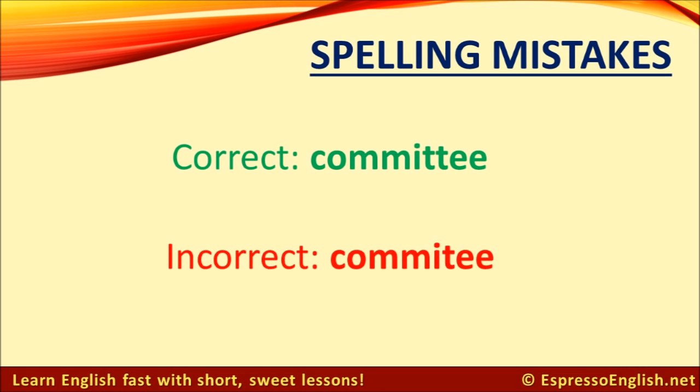Another commonly misspelled word is 'committee.' It has two M's, two T's, and two E's, so don't forget any of those double letters. A good way to remember it is that the word 'committee' refers to a group of people, and the word itself has three groups of double letters.